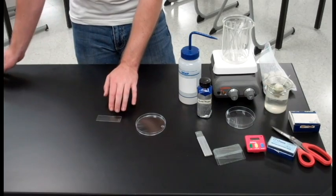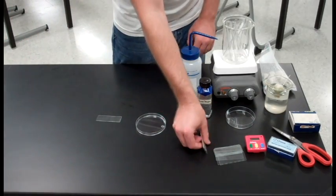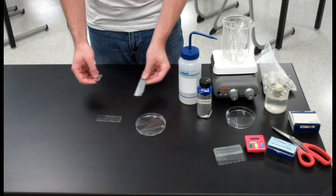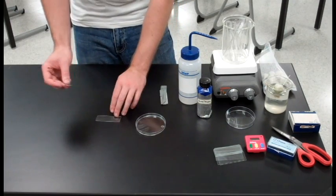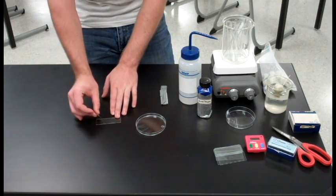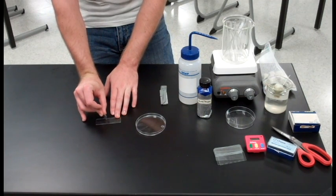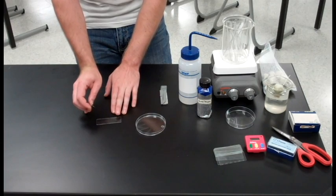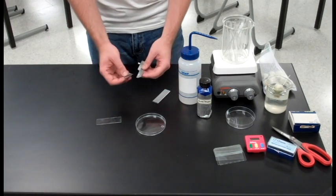Once we have it on the slide, we're ready to cut off the very tip. Remember the cells at the tip are the ones that are dividing the most. So we'll take about two millimeters from the very tip of the root and discard the rest.